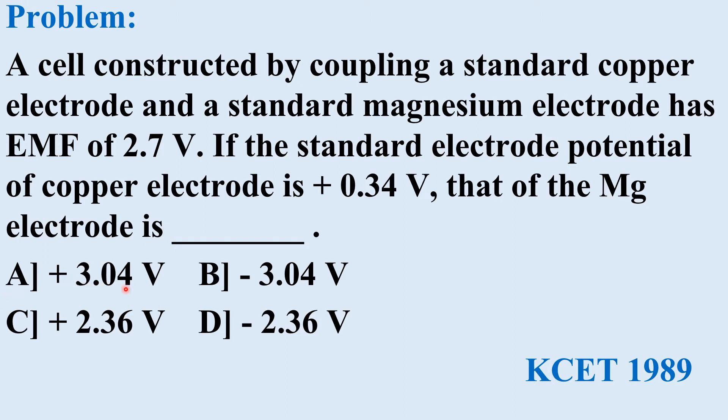Option A, plus 3.04V. Option B, minus 3.04V. Option C, plus 2.36V. Option D, minus 2.36V.